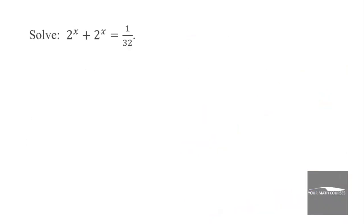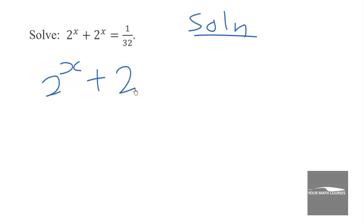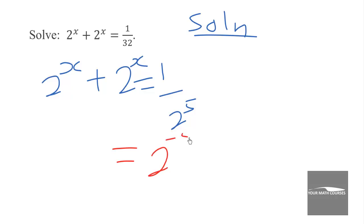The fourth question: 2 to the power x plus 2 to the power x equals 1 over 32. We write all terms to base 2, so 1 over 32 equals 1 over 2 to the power 5. Sending 2 to the power 5 into the numerator, it becomes 2 to the power negative 5.